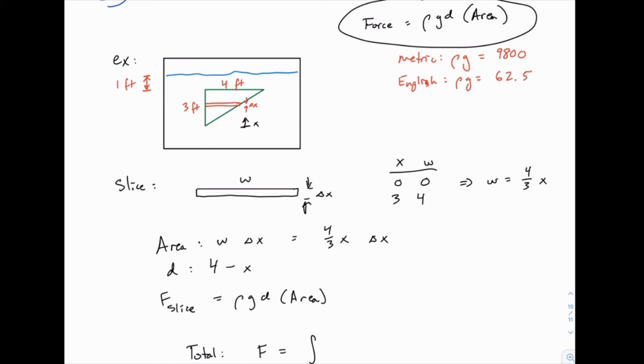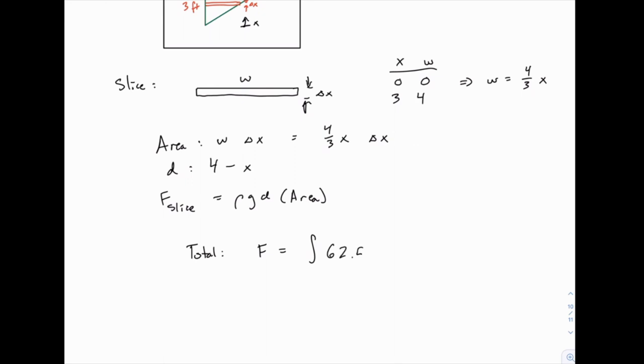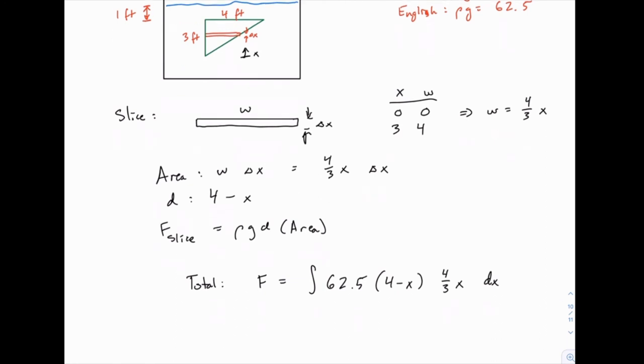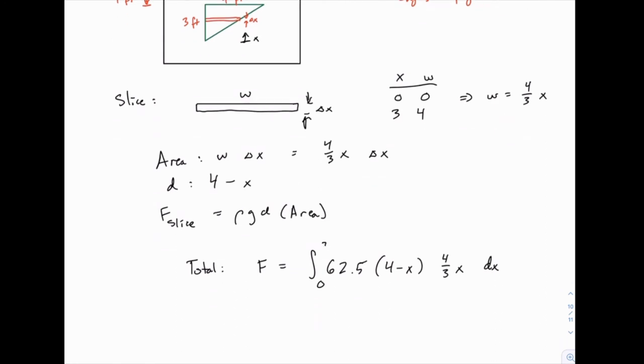And again that's something we've seen as a pattern over and over again. So it's not that confusing to see. We're working with English units, so ρg is 62.5, and everything else we can fill in. So we have 62.5, that's ρg. d is 4 minus x. And then the area is 4/3 x times Δx. But when we turn it into an integral, we get dx. The last piece of the puzzle is to add the limits of integration. The limits of integration are going to be where the plate starts and stops. And that of course is when x equals 0 up until when x equals 3 at the top. So the limits are from 0 to 3.